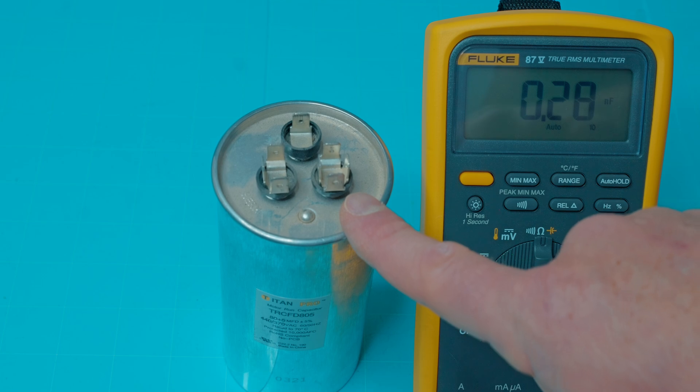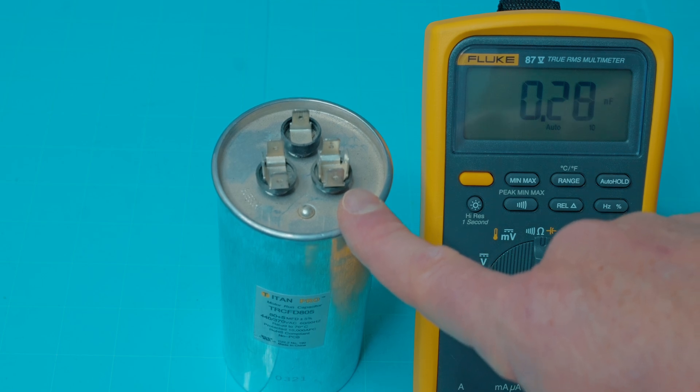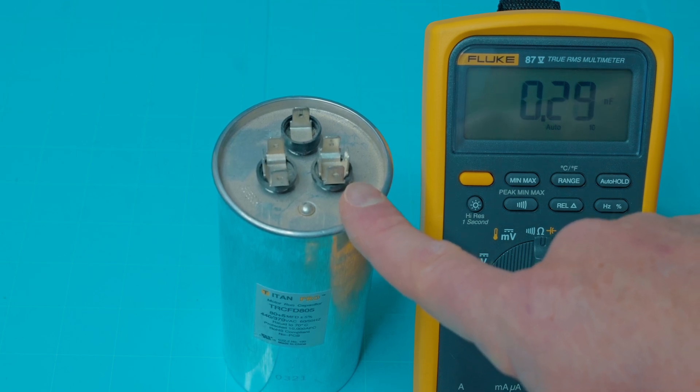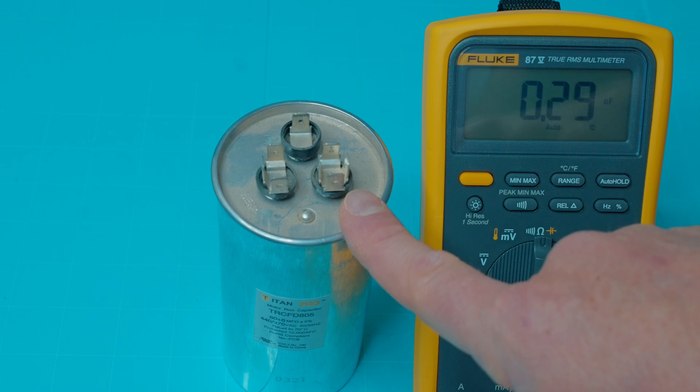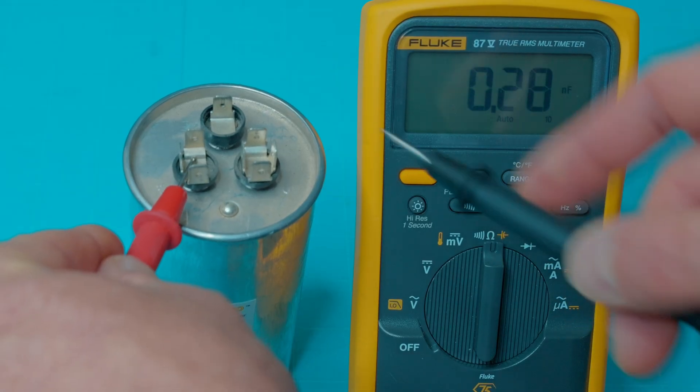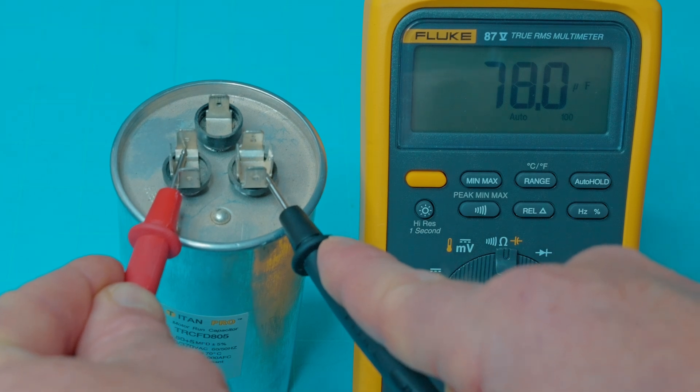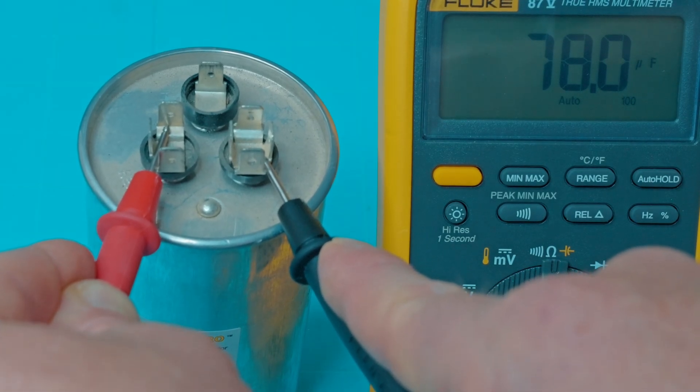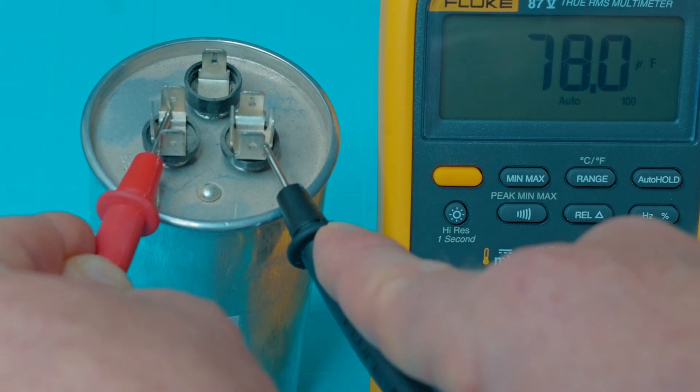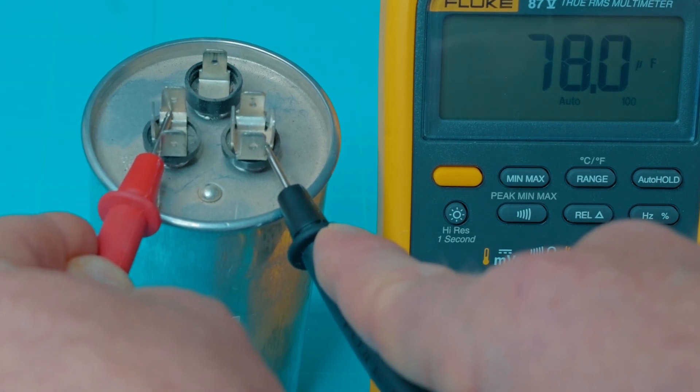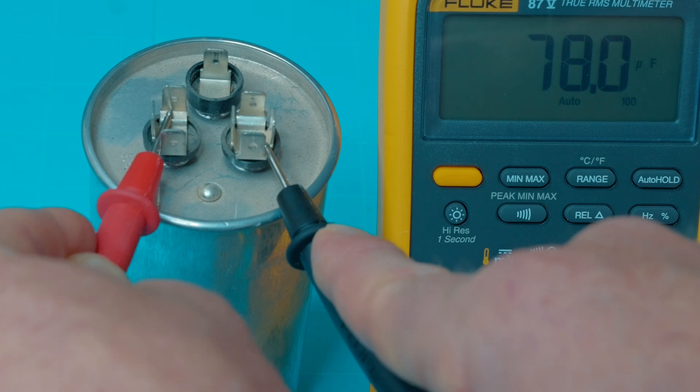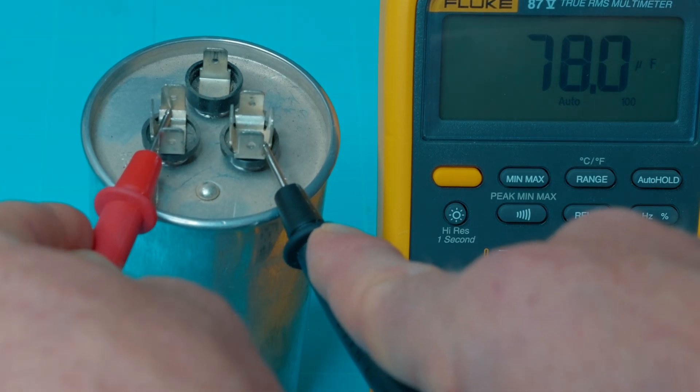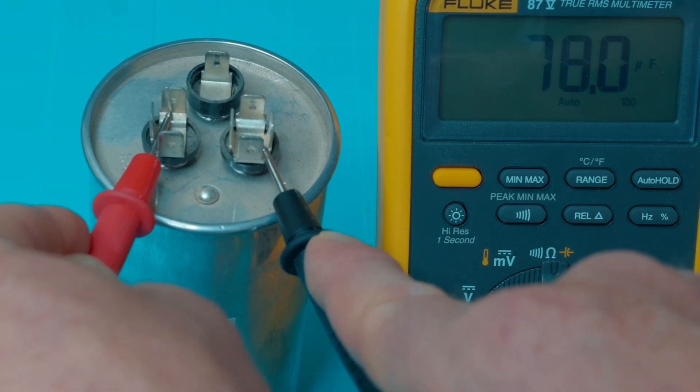This has already been properly discharged. Like I said before, never ever handle it before you discharge it with one of those tools that I showed you. We're going to go across just like the small capacitor, each terminal there. As you can see on my meter, I'm reading about 78 microfarads. This particular capacitor is rated for 80 microfarads with a tolerance of 5%, so we are indeed within that 5%.